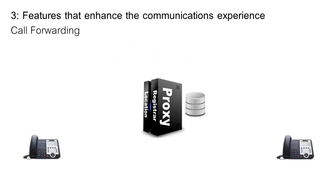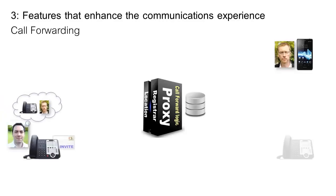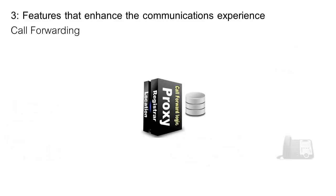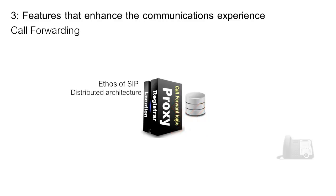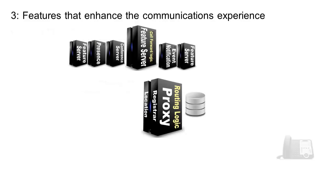Take call forwarding, for example — the ability for incoming calls to be forwarded to my cell phone when I'm out of the office. One approach is to build extra logic into the proxy so that when an invite arrives, it checks for call forwarding rules and alternate routes. But this goes against the ethos of SIP. Rather than having everything in one product with a dependency on the vendor, SIP prefers a more distributed architecture: move the application logic out to a separate device and add simple routing rules to the proxy. That way, we can add as many feature service applications as we like, each with their own special capabilities. Separate feature servers give complete flexibility — upgrades are a piece of cake, and we're no longer dependent on a particular vendor for all our special features.